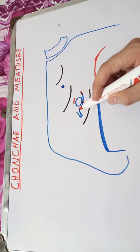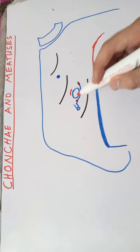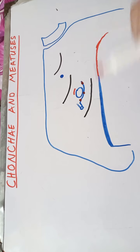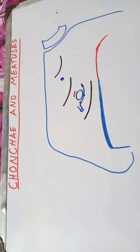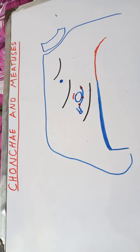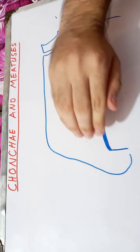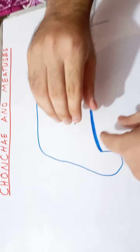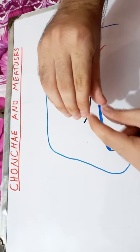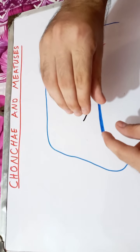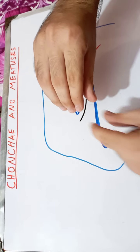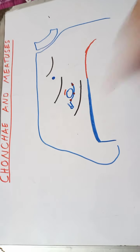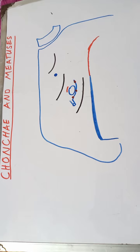You have to remember the sequence: at the anterior end of the semilunar hiatus there is the opening for the frontal sinus, then the anterior ethmoidal sinus, then the maxillary sinus. The ethmoidal bulla is a rounded structure, and all these sinuses open at its underside; through the vestibule, these three sinuses drain into the nasal cavity.